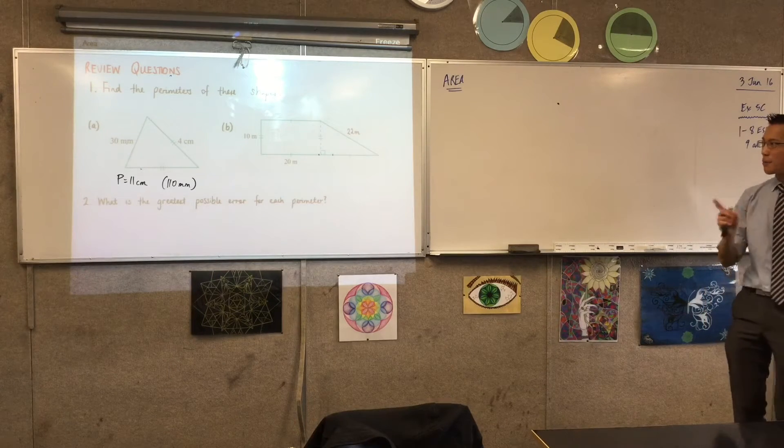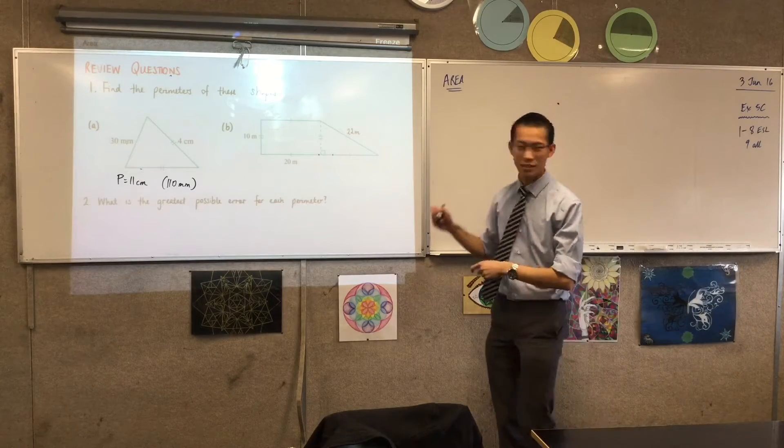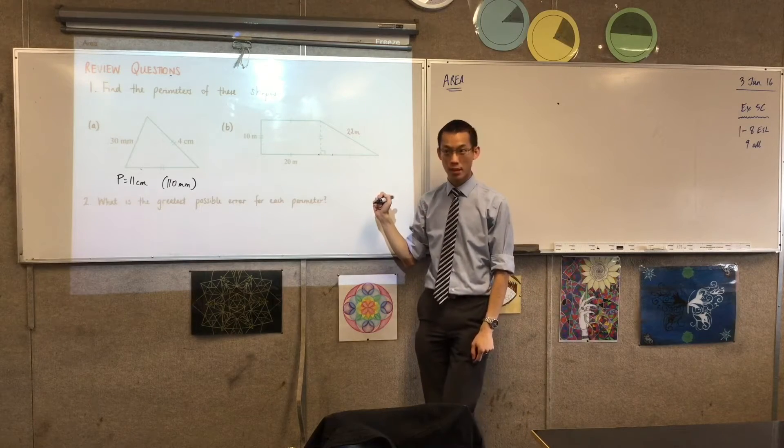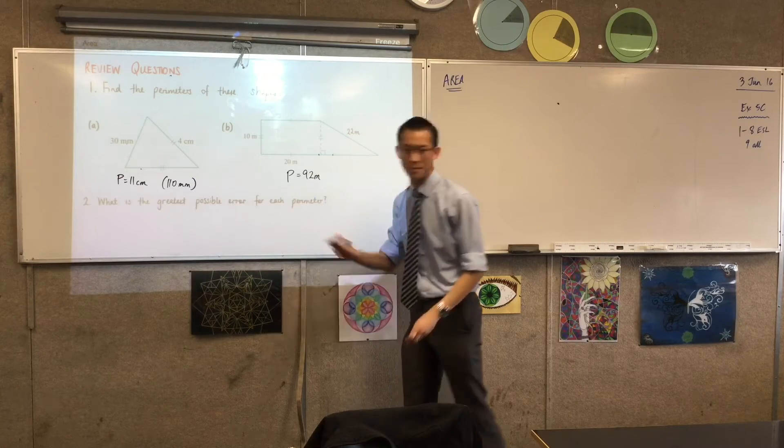Part B. Now, I'm going to get you to give me an answer, and then I'm going to actually get you to do some working with me on this question, because it's interesting. Has someone got a perimeter for me? 92. Sounds like we've got agreement.